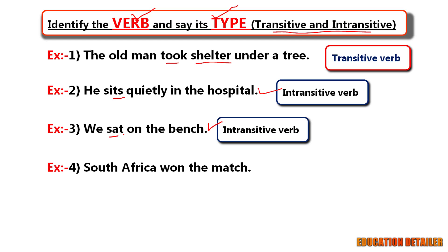South Africa won the match. Here simply ask a question: South Africa won what? The match. So here the verb is transitive.